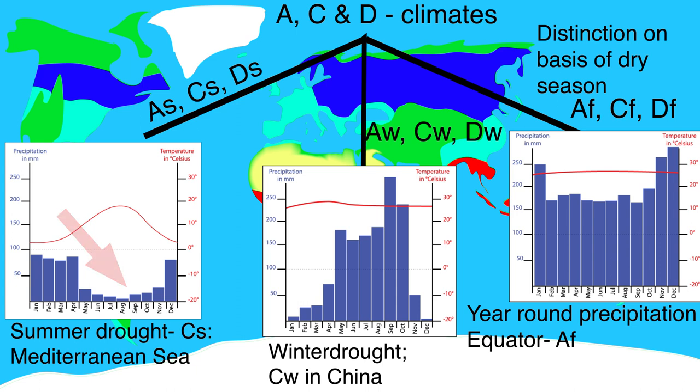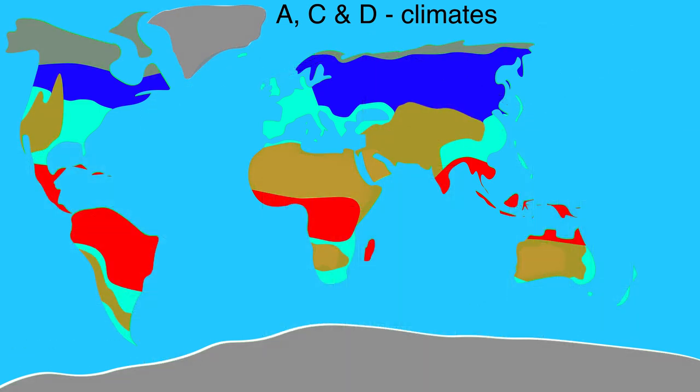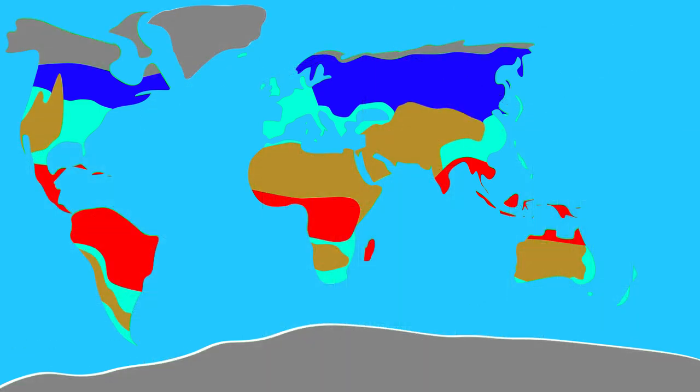By dividing the world into these climate areas it is quickly clear which climate we can expect in certain places.